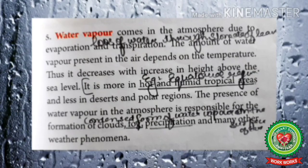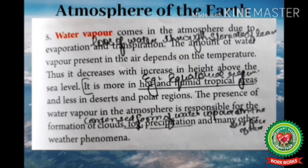Water vapor comes into the atmosphere due to evaporation and transpiration. Evaporation is the process in which liquid changes into gaseous state; transpiration means the loss of water from the leaves through stomata. The amount of water vapor present in the air depends upon the temperature — the degree of hotness and coldness. If the temperature is high, evaporation will be high, and if temperature is low, evaporation will be low. Thus water vapor decreases with increase in height above sea level, because places at high altitudes have low temperature and the air has less capacity to hold moisture.